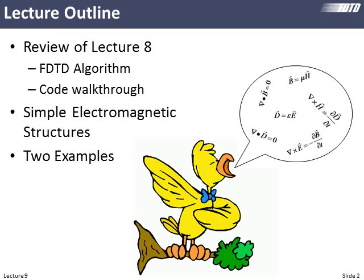So we'll review lecture eight, the basic FDTD algorithm, and then walk through the code for what we did last time for modeling transmission and reflection from a slab. Then I'll step you through some simple electromagnetic structures and I'll give you some simulation examples of two things. I won't go into a whole lot of detail there, but I'll explain the structures, I'll show you the simulation results, and you can use those to benchmark your code, simulate those, duplicate the results in these notes, and then you have a pretty good idea that your code is working correctly.